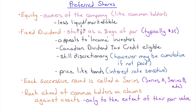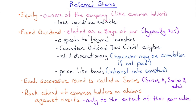Preferred shares have a fixed dividend stated as a percentage of par value. Par on preferred shares is typically $25, sometimes $50. They appeal to income investors because of their low price volatility — unlike common shares, which move around a lot. Preferred share prices have low volatility but pay a regular stream of income.